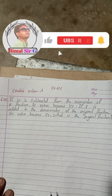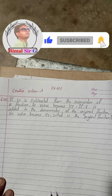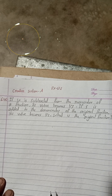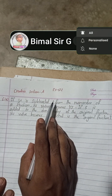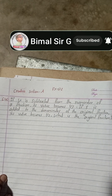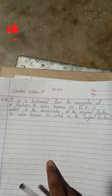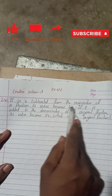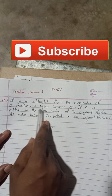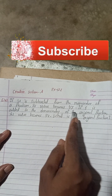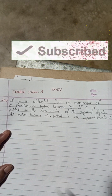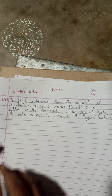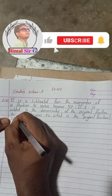Hi everybody, welcome back to Bimal Sarji's channel. This is a question from Class 9, simultaneous equation or linear equation, Exercise 12.2, Creative Section A — a request from one of my YouTube subscribers. Question 6A: if 4 is subtracted from the numerator of a fraction, its value becomes 1/3. If 5 is added to the denominator of the original fraction, its value becomes 1/2. What is the original fraction?